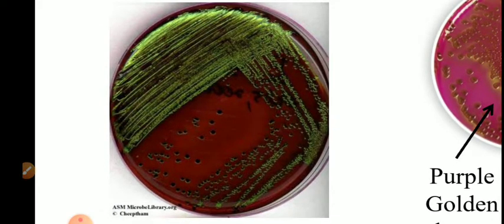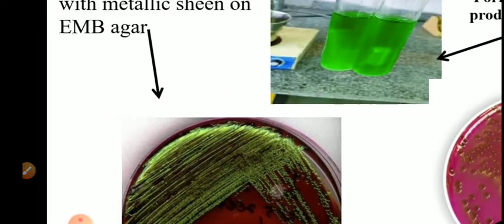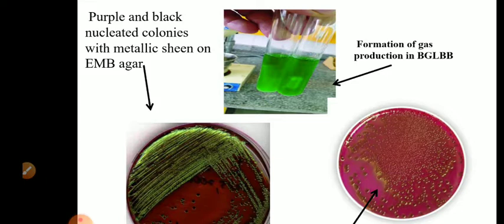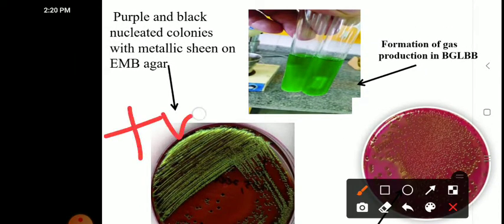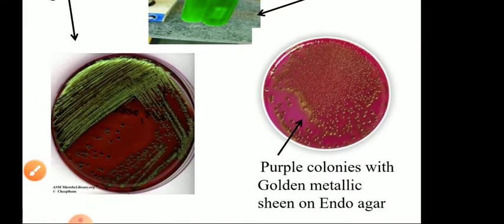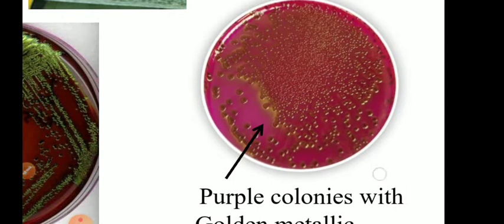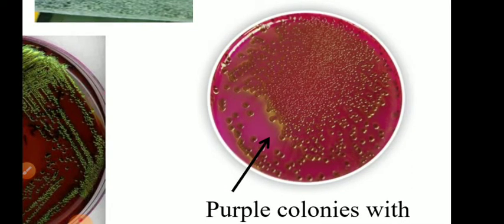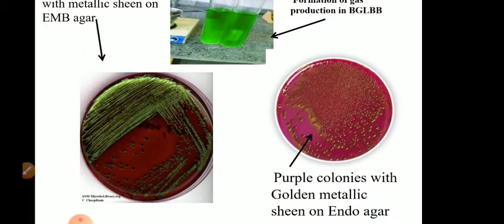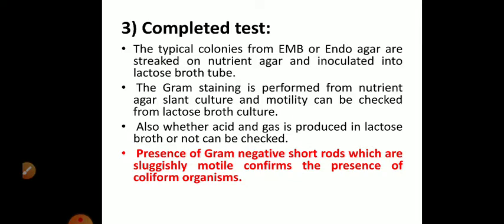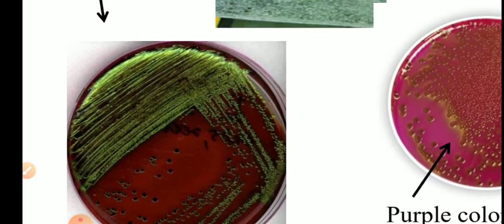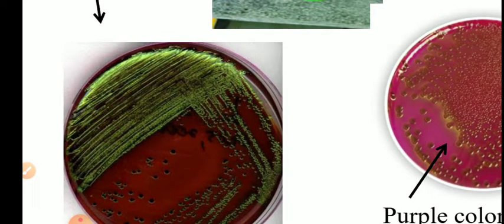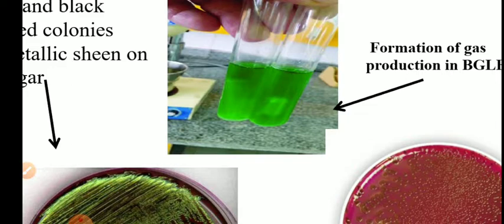You can see here the colonies on EMB agar are purple dark-centered with green metallic sheen. If such purple dark-centered, dark-nucleated colonies with metallic sheen are obtained on EMB agar, the confirmed test is positive, and this green metallic sheen indicates fecal coliforms are present. The third plate shown is the endo agar plate having purple colonies with golden metallic sheen — if such dark purple colonies with golden metallic sheen are observed on endo agar, that means fecal coliforms are present in the water sample. If negative or colorless colonies are produced on EMB or endo agar, coliforms are absent and the presumptive test was false. If there is no gas production in BGLBB, coliforms are absent.